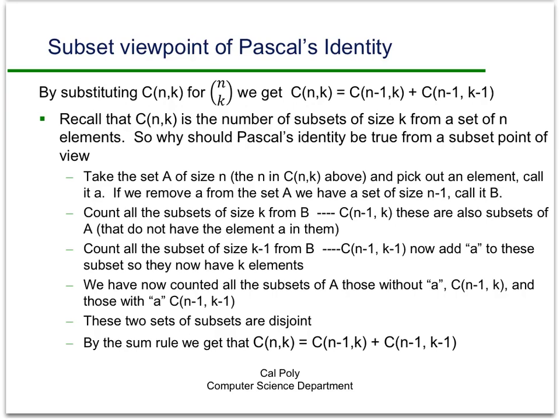So now we're going to get all the subsets of, how big are those subsets going to be? They're all going to be size k. They all have k elements and they're all subsets of A because they were subsets of B and we just added a to them. And so now we've got all the subsets of capital A, those without a, and we got that from all the combinations of taking k things from n minus 1, and those with a. And we got that from all the subsets of taking k minus 1 things from n minus 1 things.